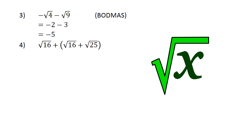Square root of 16 plus in brackets square root of 16 plus square root of 25, close brackets, is equal to 4 plus in brackets 4 plus 5, close brackets, is equal to 4 plus 9, is equal to 13.